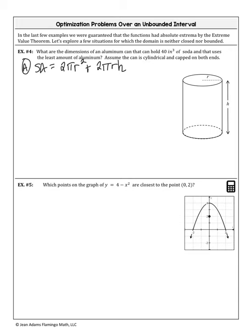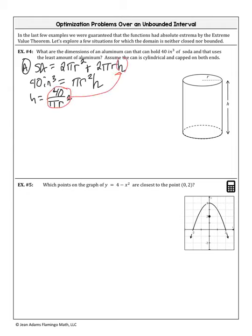The volume constraint is 40 = πr²h. It's easiest to solve for h because there's only one h in the primary equation. So h = 40/(πr²). Then substitute that into the surface area equation: S(r) = 2πr² + 2πr · (40/(πr²)). The π's cancel and one r cancels, giving the simplified primary equation: S(r) = 2πr² + 80r⁻¹.